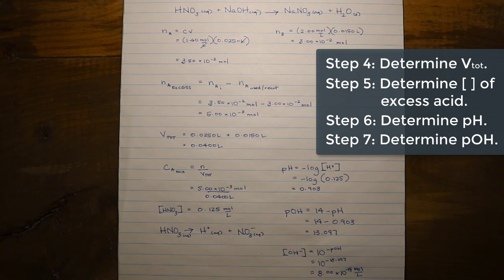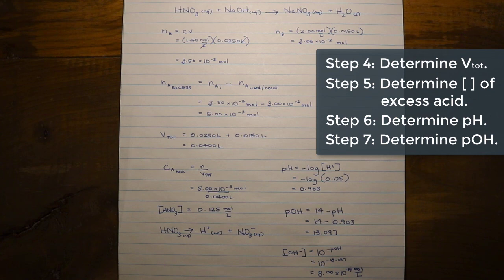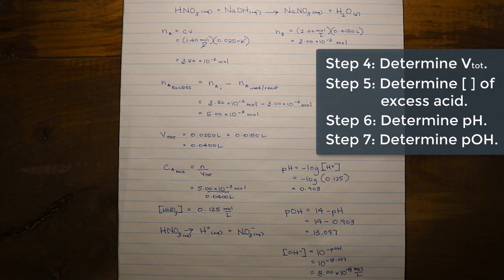Even though reactions involving strong acids and strong bases seemed straightforward when predicting salt and water production and a neutral solution, it is not always that simple — especially when there's excess acid or base remaining. We must consider the concentrations of hydrogen and hydroxide ions to calculate pH and pOH. Hopefully you now have a better understanding of how to calculate pH, pOH, hydroxide ion concentration, and hydrogen ion concentration from any one of those values.